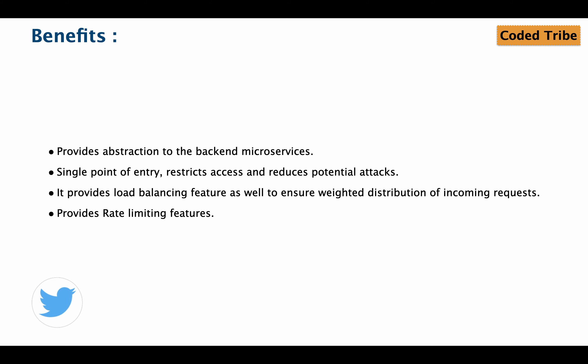The first benefit is abstraction: the client has no information about which technology the microservice is built on, their locations, IP addresses, or individual URLs. The API gateway also provides a single point of entry and restricts access for unauthorized persons. Unauthenticated or unauthorized requests will be rejected straight away, reducing potential attacks to the application.